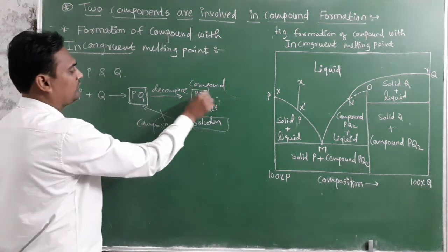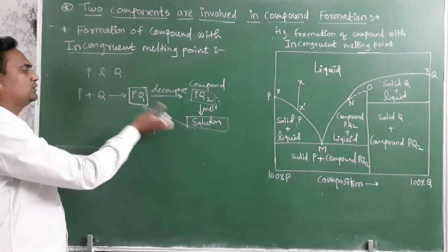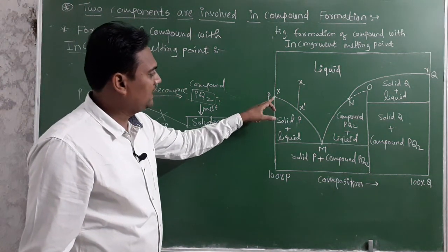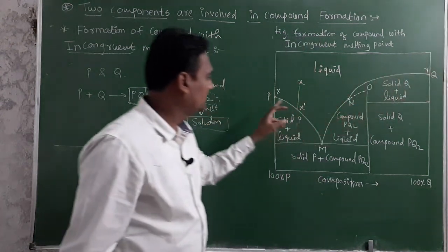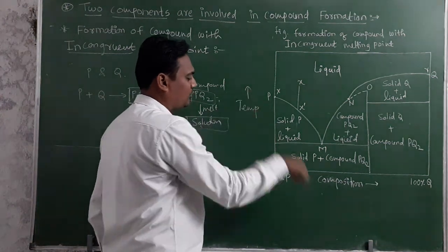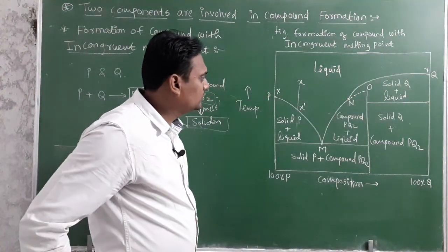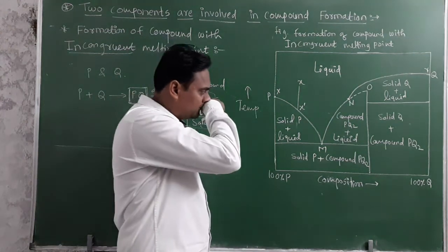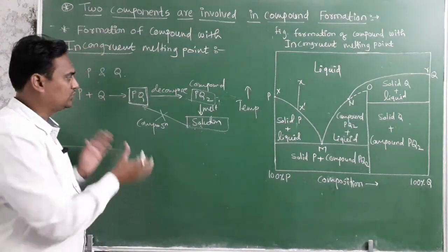On the phase diagram, point X is the melting point of component P and point Y is the melting point of component Q. This is a temperature versus composition graph, with the melting point of P on one side and the melting point of Q on the other. The curve PM is the fusion curve of P — along this curve, solid P and liquid are in equilibrium.